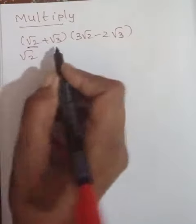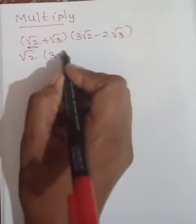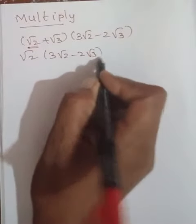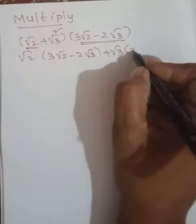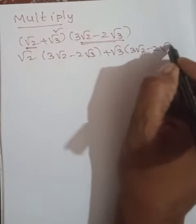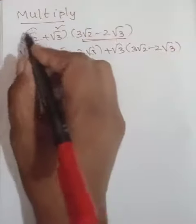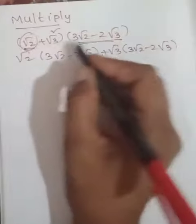First you are multiplying √2 with this bracket, that is 3√2 - 2√3. Then the next term is +√3, you are multiplying once again with this, that is 3√2 - 2√3. Very simple: this one with the whole thing and this one with the whole thing.